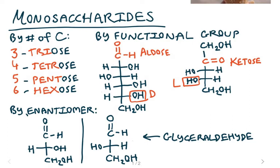So when you're counting the carbons, you can see 1, 2, 3, 4, 5, 6, and we can call it a hexose.